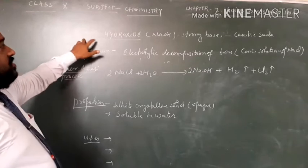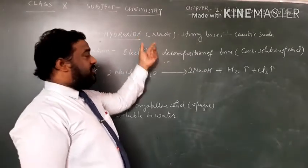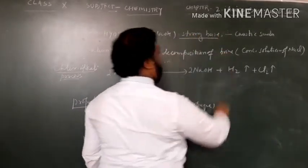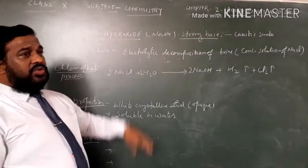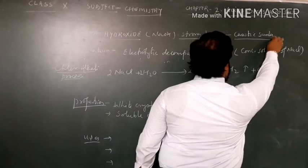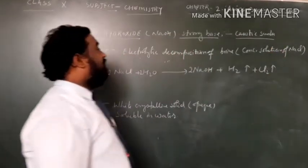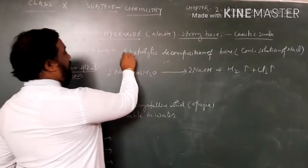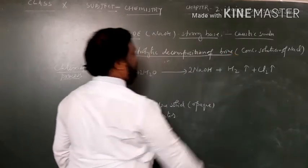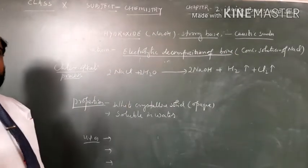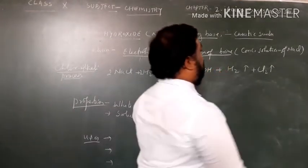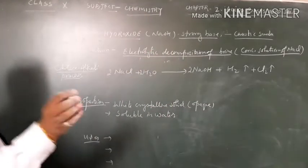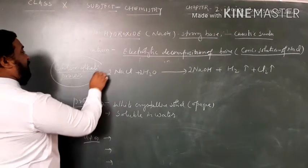The next compound is sodium hydroxide. This sodium hydroxide is a strong base, and it is also known as caustic soda. This sodium hydroxide is prepared by electrolytic decomposition of brine. Brine is a concentrated solution of sodium chloride, NaCl. This method is also known as chloralkali process.